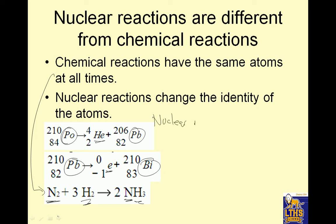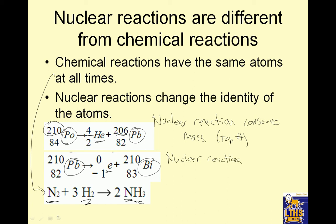What is constant in nuclear reactions — I'd write this down — nuclear reactions conserve mass. Look right here: 206 plus 4 is 210. They conserve mass, which is the top number. Nuclear reactions also conserve protons. Look: 83 plus negative 1 equals 82. They conserve protons. And remember, chemical reactions conserve atoms — so you have 2 nitrogens, 2 nitrogens, 6 hydrogens, 2 times 3 equals 6 hydrogens.